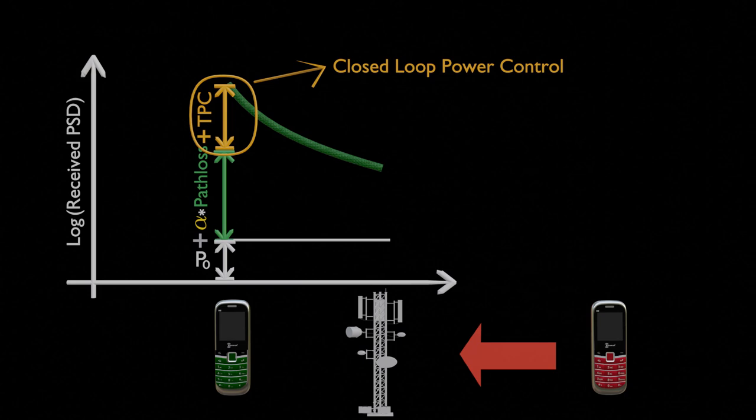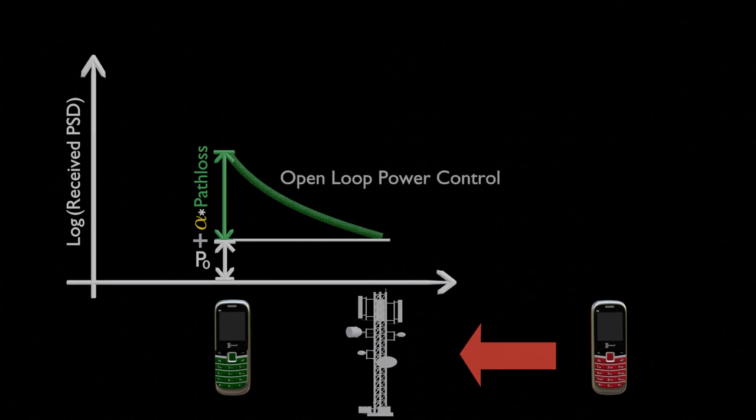It's called closed-loop because the base station is actively giving feedback to adjust the UE's power based on what it receives. If the base station doesn't send any TPC command, then we're dealing with open-loop power control.